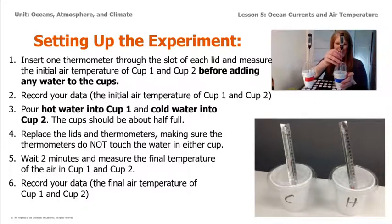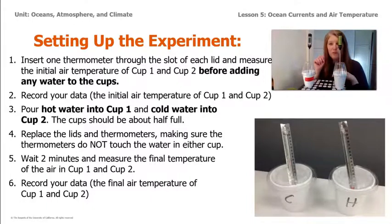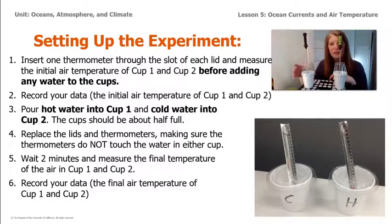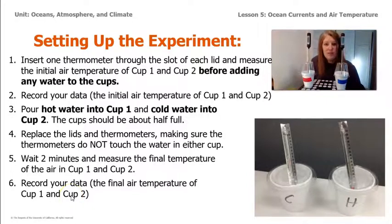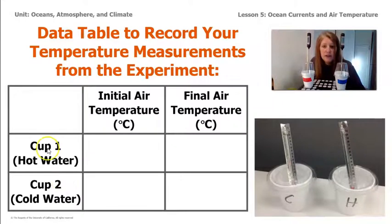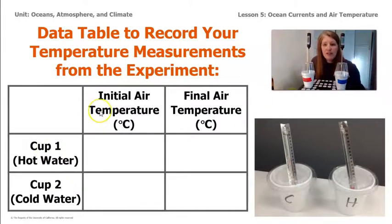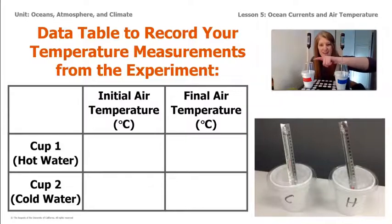The temperature of our cold water cup is 22.1 degrees Celsius, and the temperature of our hot water cup is 22.2 degrees Celsius — so they're slightly different. We'll record that using a data table like the one shown on screen. We want to know what the initial air temperature is and also the final air temperature of both the cup with the hot water and the cup with the cold water.